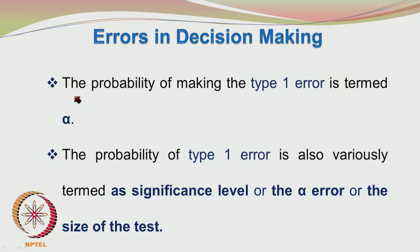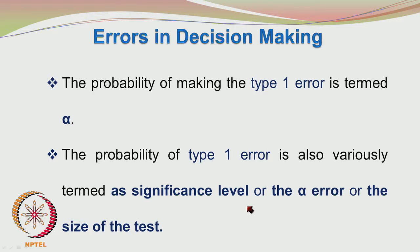The probability of making the type 1 error is termed alpha. Alpha is denoted by various names: it is termed as the significance level, the alpha error, or the size of the test. The term significance level is the most commonly used.